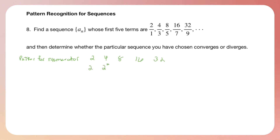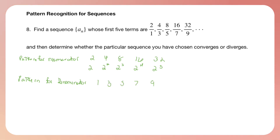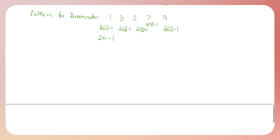We're going to look for a pattern from the numerator. I noticed that if I take two and raise it to a power, I get the numerator term. And the pattern for the denominator — which is the numbers one, three, five, seven, nine — I noticed those are odd numbers. So if my first term is where n equals one, if I take two times one minus one, that gives us one. Two times two minus one gives us three. Two times three minus one gives us five. Two times four minus one gives us seven. So we notice our pattern here is two n minus one. Putting that together, our a sub n — our nth term for this sequence — is two to the n divided by two n minus one.